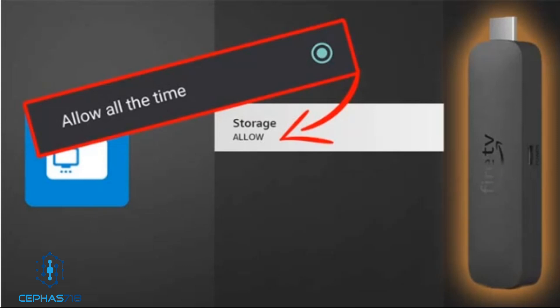Also don't forget to hit that like button as well. In this video we're going to go over how to allow full file storage access permission for any app in Fire OS 8. Now I know some of you have been trying to use Total Commander or the Explore app to access your third-party APKs using the Downloads folder, but it's still prompting you for full file access.